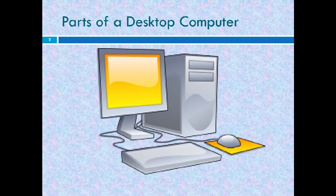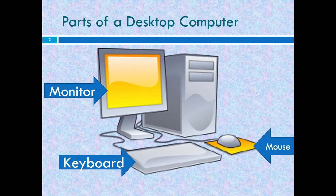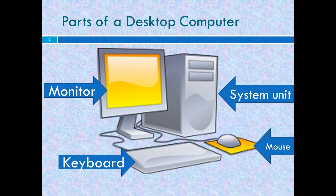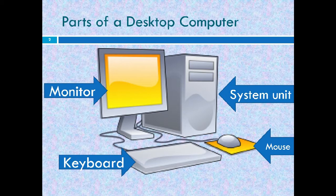These are the parts of a desktop computer. A monitor which displays the output. A keyboard which we use to type letters, words, and numbers. And also a mouse that we use to input something into the computer. And the system unit which processes the data that we input into the computer.